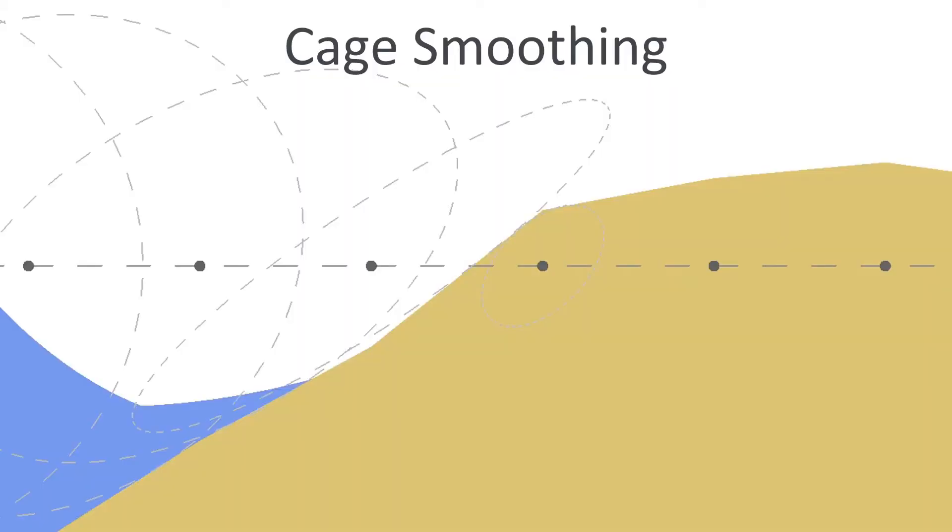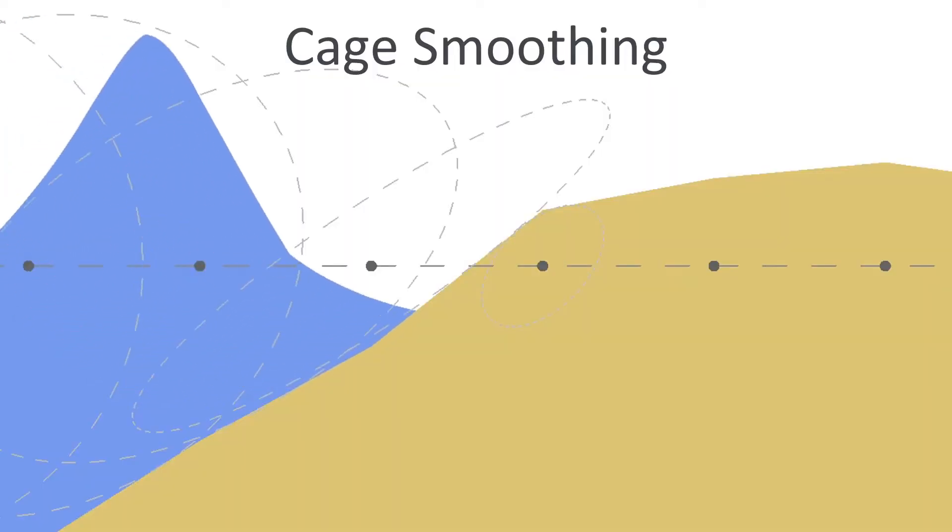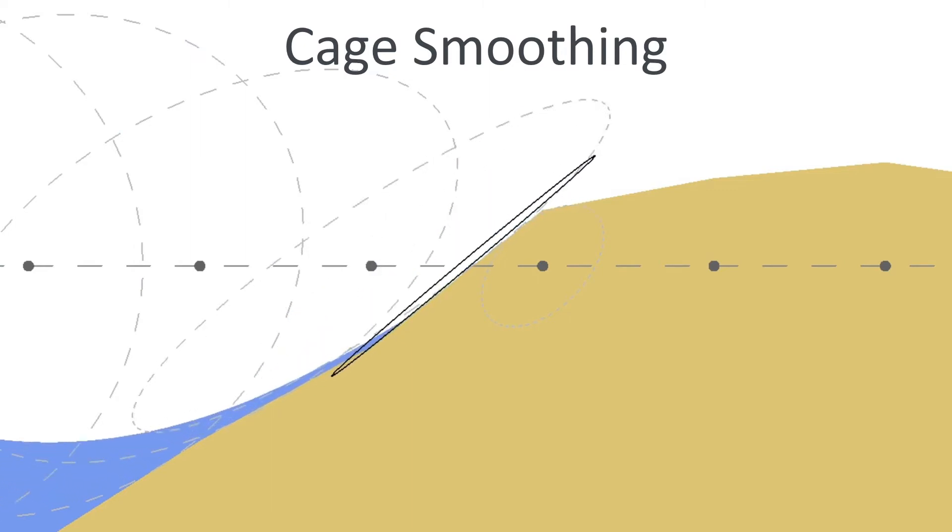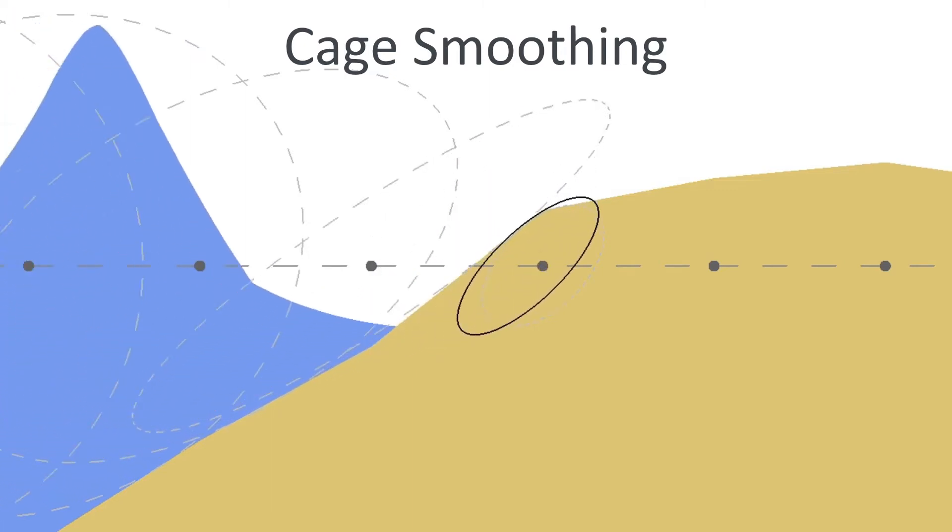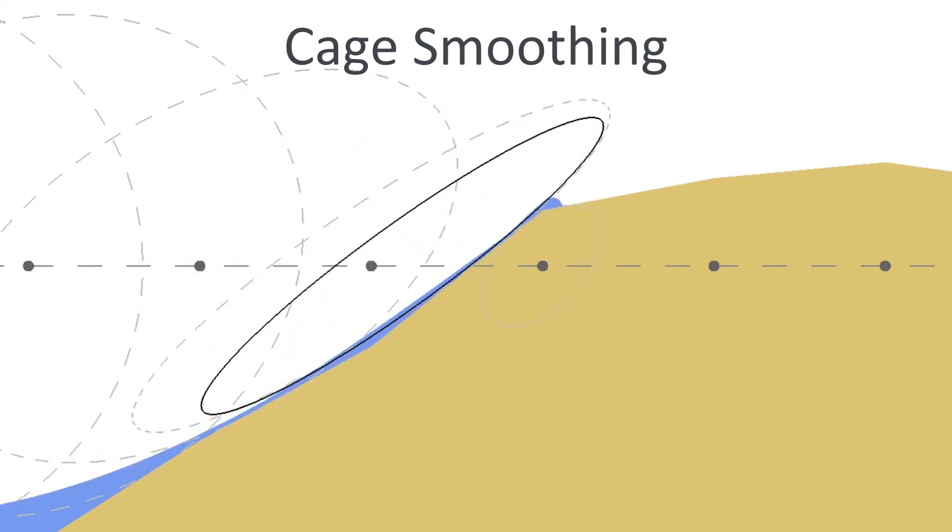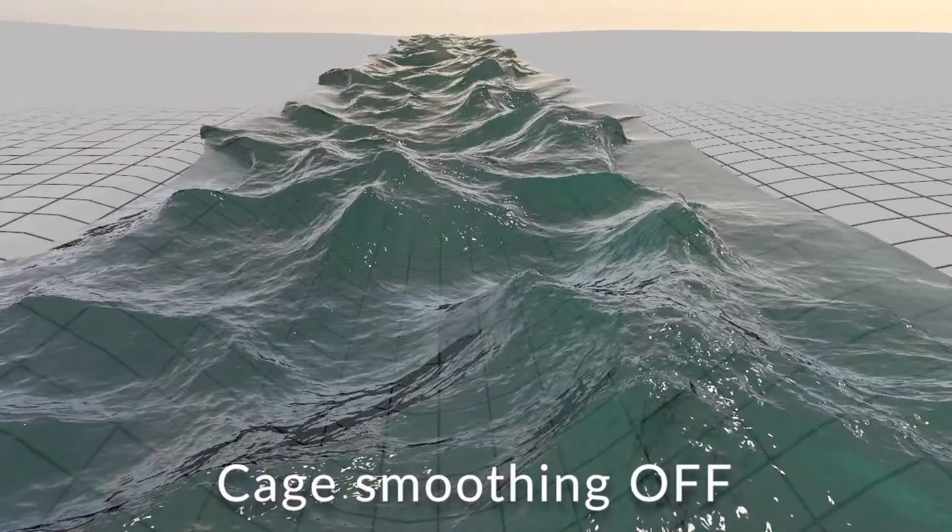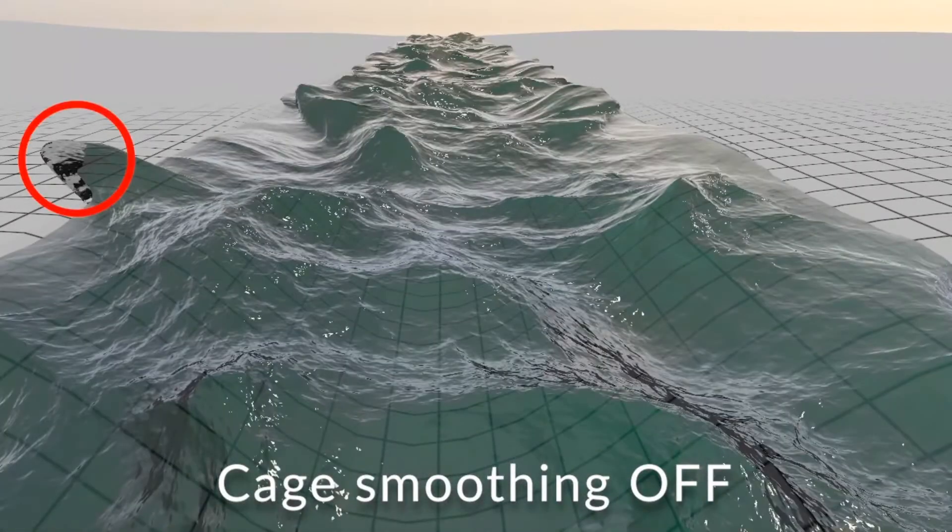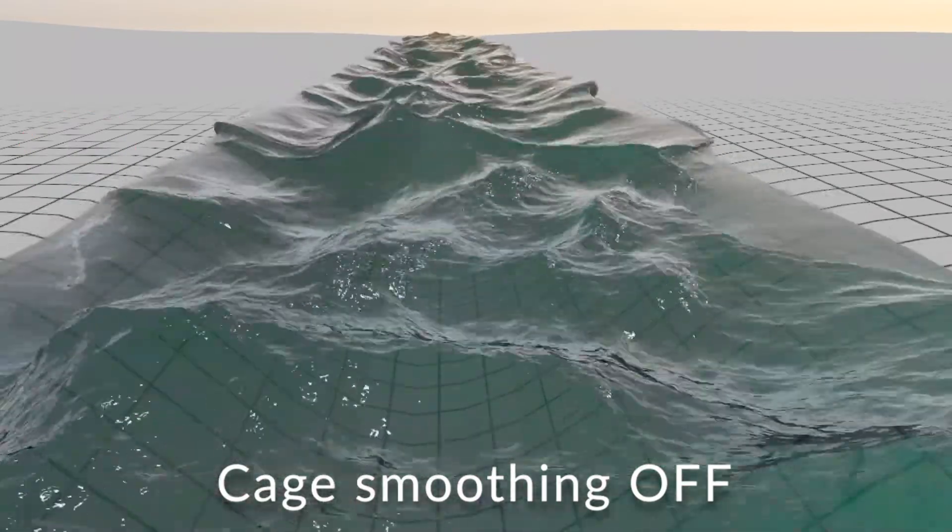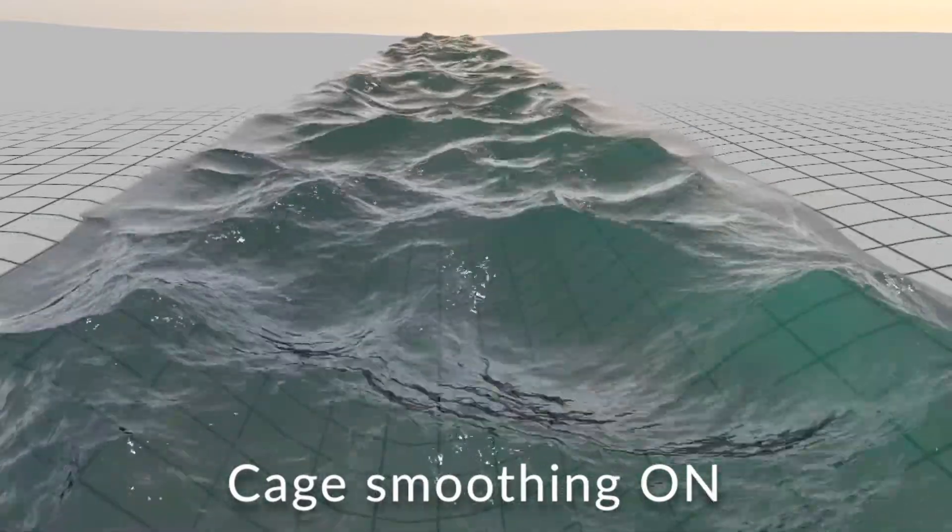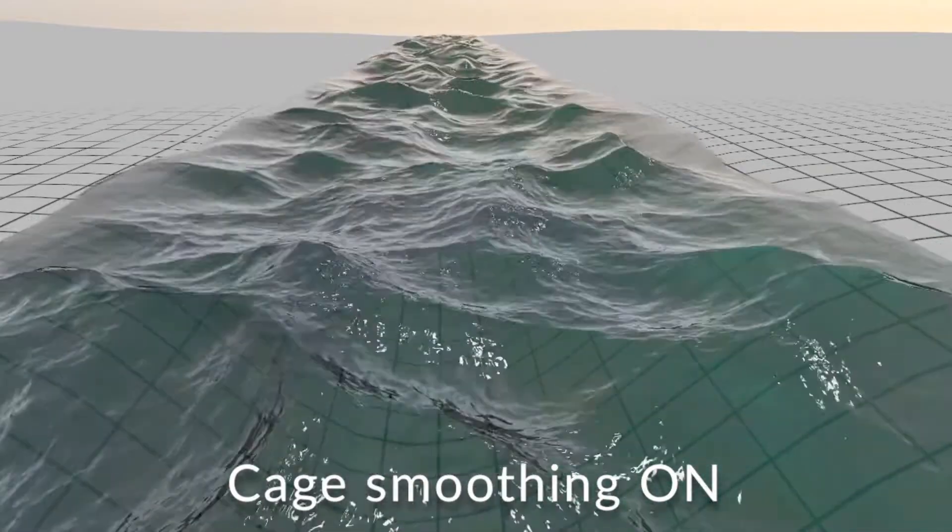Another issue worth noting is that cage radii can abruptly change at the boundary, as visible here. This causes waves to unrealistically protrude over the boundary. We remedy this by spatially smoothing cage radii, as described in the paper. Here we again see how waves protrude unrealistically. And how we remedy this by smoothing the cage radii.